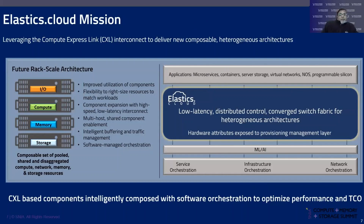Elastics.Cloud's mission is to create composable infrastructure connected by CXL as a high-speed, low-latency highway across distributed control and distributed devices, which increases performance and reduces latency across components when they communicate. The resources are IO resources, compute resources, memory resources, and storage resources. All these resources are tied together with CXL, giving a heterogeneous architecture where components are highly optimized to process data as fast and efficiently as possible to reduce overall TCO at scale.